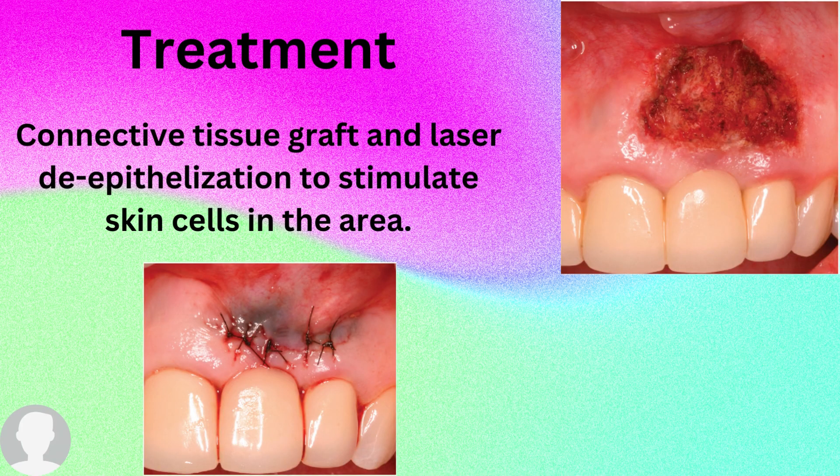Now, how can we get rid of the amalgam tattoo or this discoloration on the gums? The treatment we can provide is a connective tissue graft and laser epithelialization to stimulate the skin cells in the area. We perform laser treatment on the affected area.